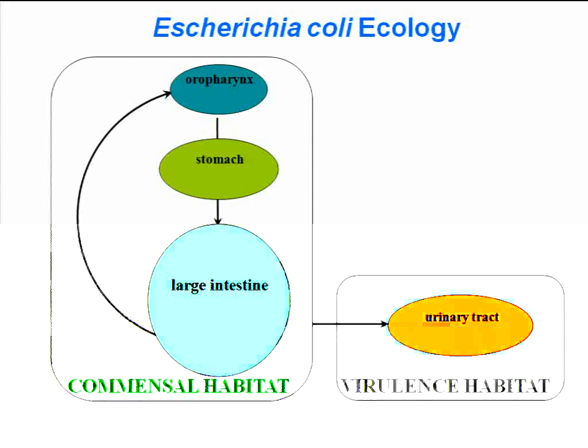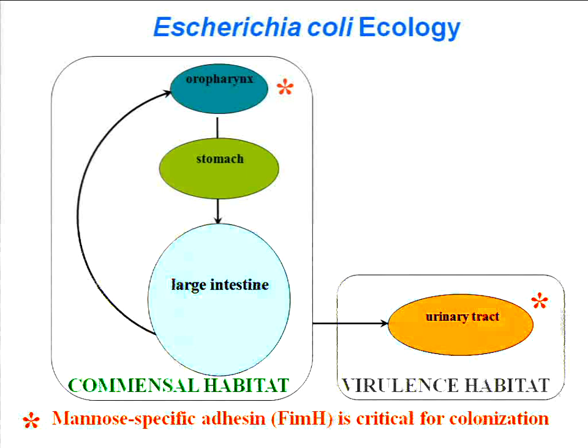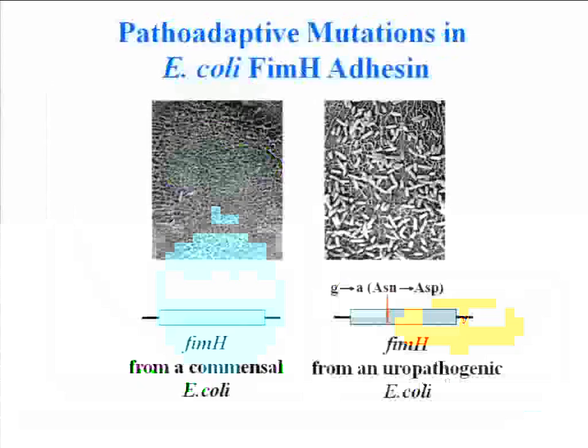This is a scheme, and I would like to show a real example. But before that, I would like to talk about E. coli. The oropharynx, stomach, and large intestine form the primary habitat in the human host, which is mostly non-pathogenic or commensal. The urinary tract is one of the virulence or alternative habitats that is always virulent in humans. In the urinary tract, there is a specific type of adhesin molecule termed FimH, which binds to a specific mannose or sugar-like substrate and is critical for colonization. FimH is one of the core genes of E. coli, present in almost all E. coli strains.